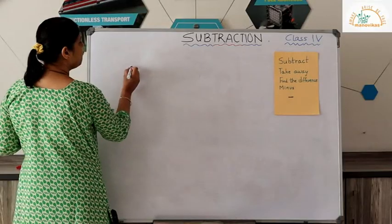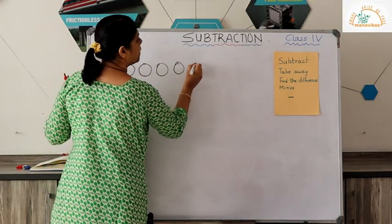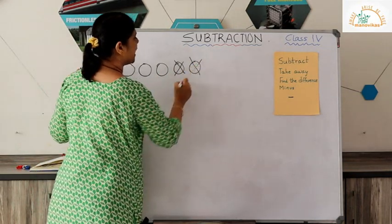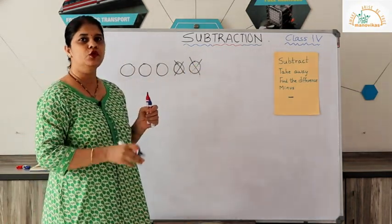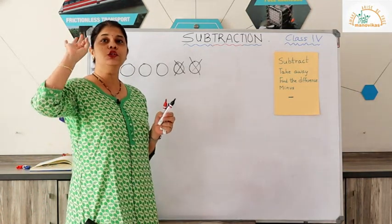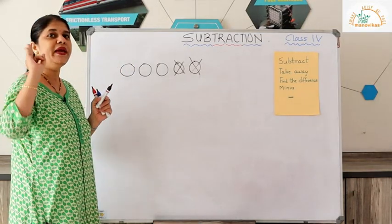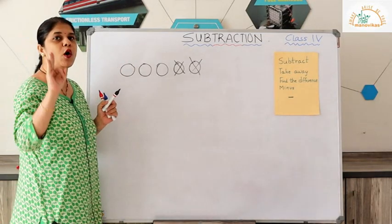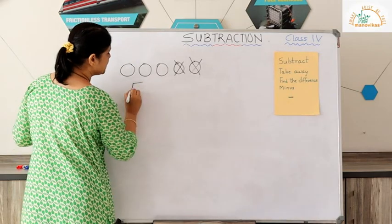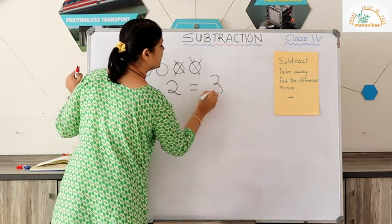A basic explanation for subtraction: I have five laddus, my brother takes away two laddus — how many laddus do I have left? I had five, my brother took away two, so three are left. This is the basic concept of subtraction, written as five minus two equals three.